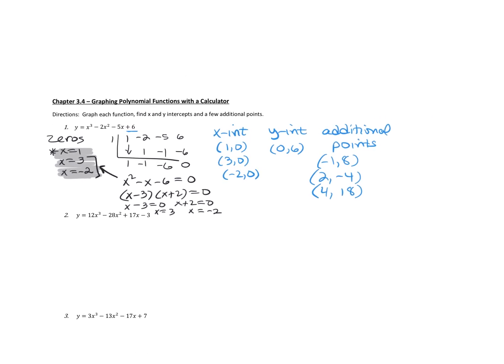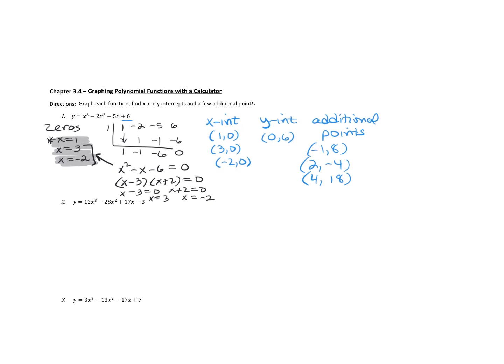Then go ahead and graph it — just give a rough sketch. Remember from chapter three, we talked about end behavior. It was x cubed, so the end behavior is falling left and rising right. Because it's x to the third power, we're looking for three zeros, and we found those three zeros. The three zeros may all be rational, some may be irrational, or we may also find imaginary zeros, and you will be listing those.